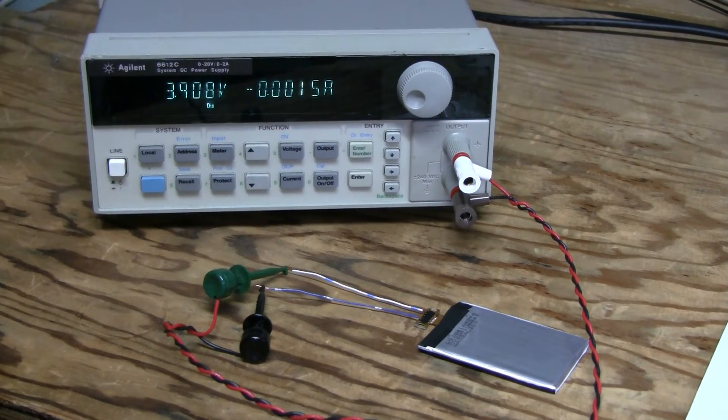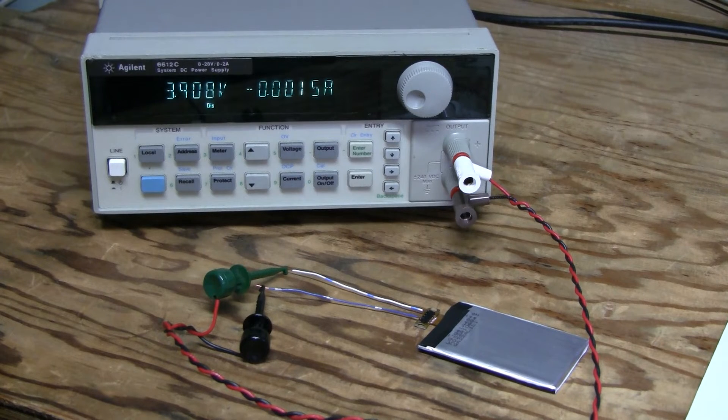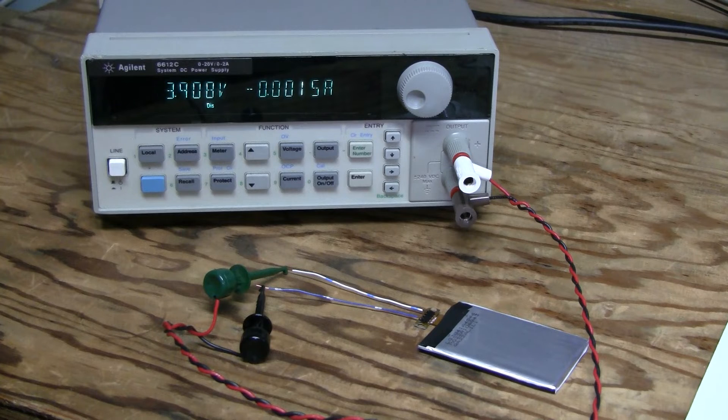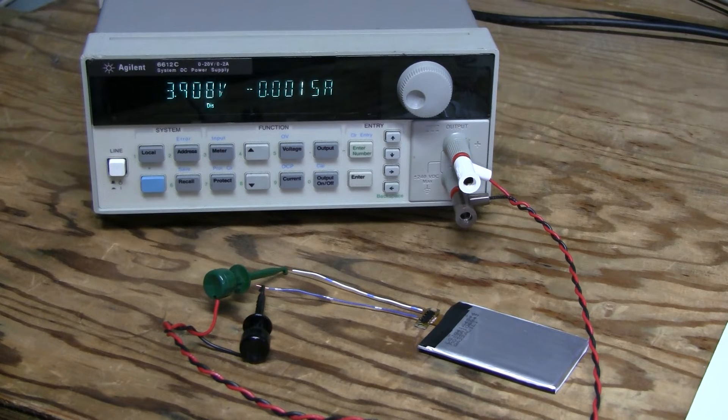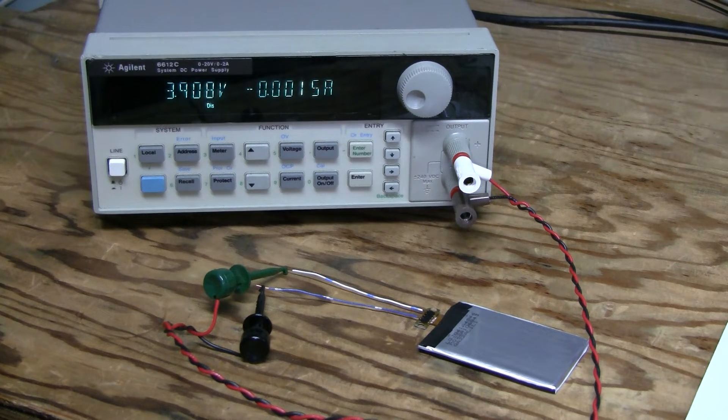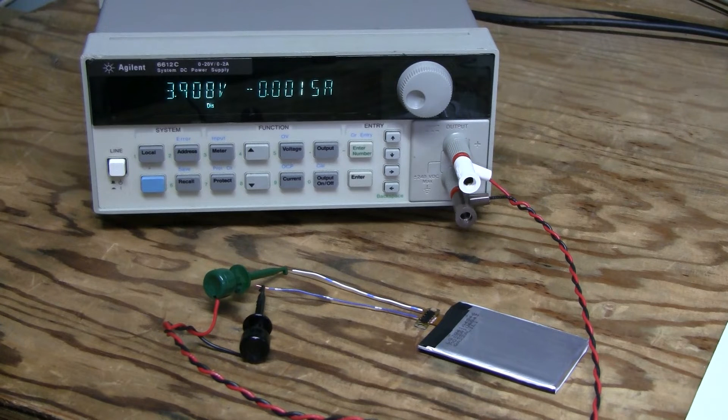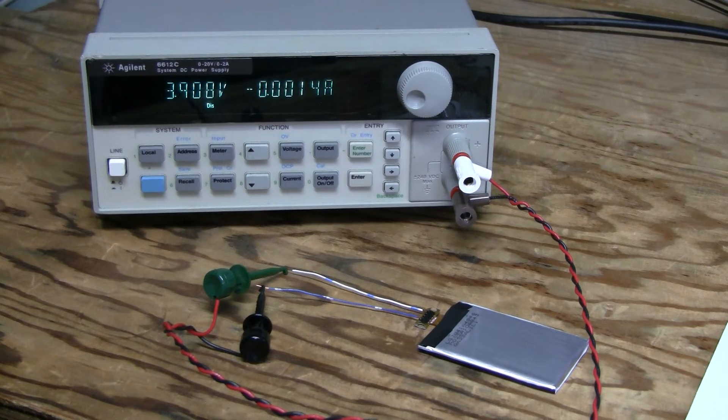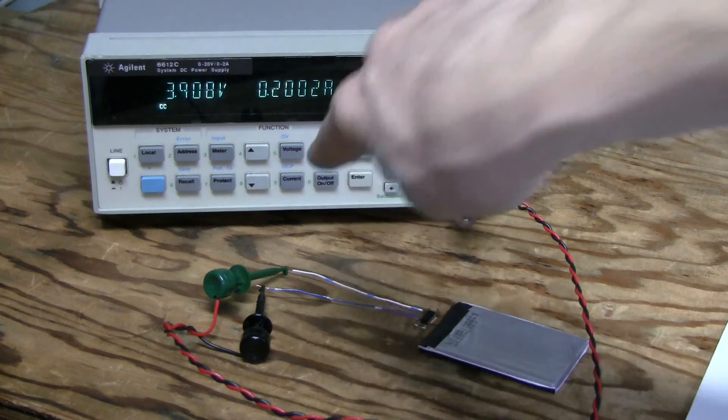Let's charge it first. I hooked it up to this precision lab supply. I set the target voltage to 4.3 volts and current to 200 milliamps, which is about 0.1C. Let's go super easy on this battery. And let's start the charging.